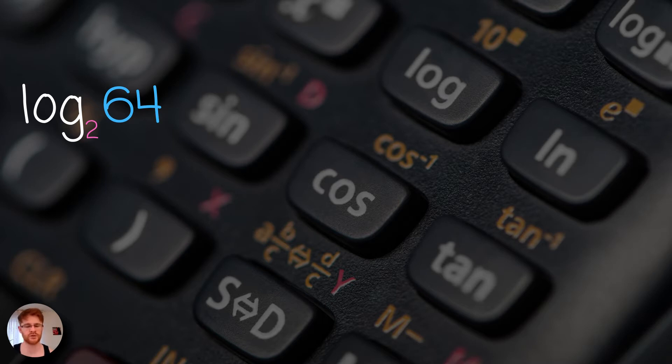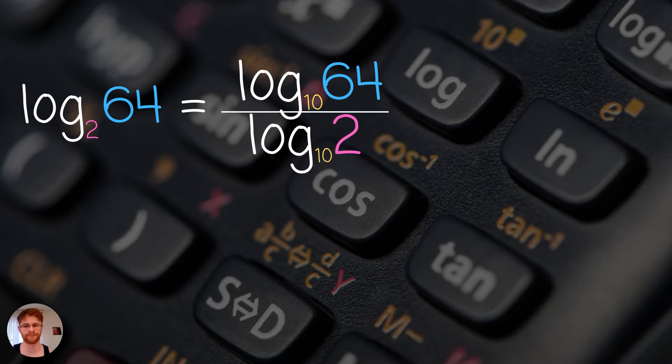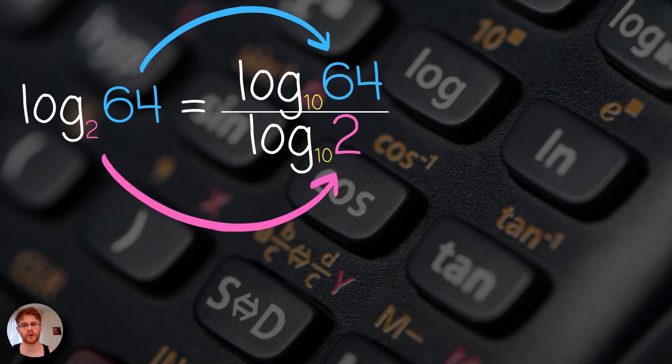Let's say we wanted to use our log base 10 button to calculate this log base 2 of 64. Using the change of base relation, we can rewrite this as log base 10 of 64 over log base 10 of 2, where we take log base 10 of the exponential in the numerator and log base 10 of the base in the denominator. Notice how we've expressed this log of base 2 as a ratio of logs of base 10, which we can calculate using the log base 10 button on the calculator.